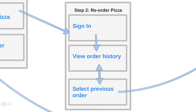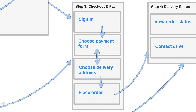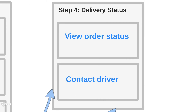This reorder flow is actually really simple. She's probably already signed in, but if she hasn't, she'll be asked to sign in — consider that Debbie might have more than one device, like a tablet or multiple phones. Once signed in, she'll be able to see her full order history, select a previous order, and place an order for it. Now we're back to step three, check out and pay, and because she's already signed in, all she has to press is place order. Step four will be the same as before.